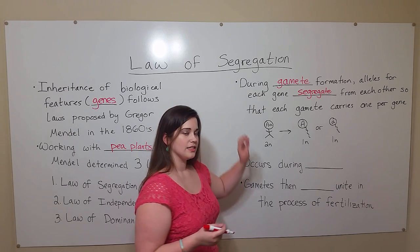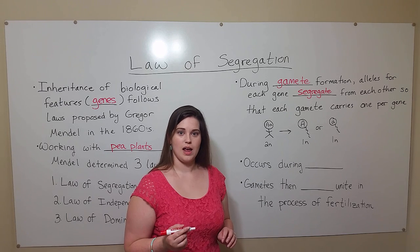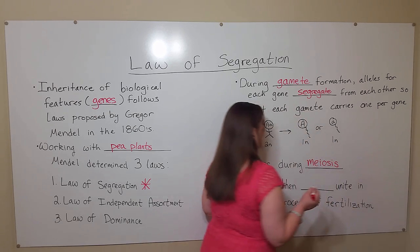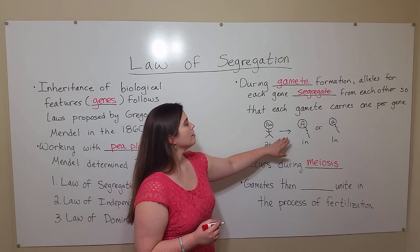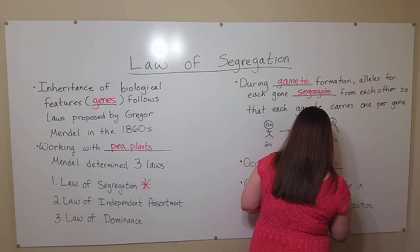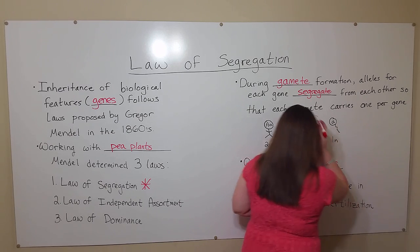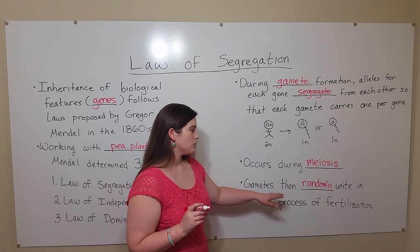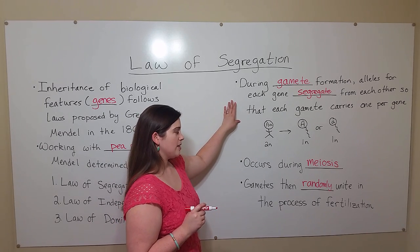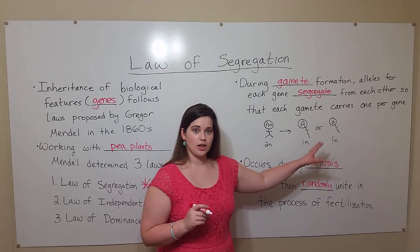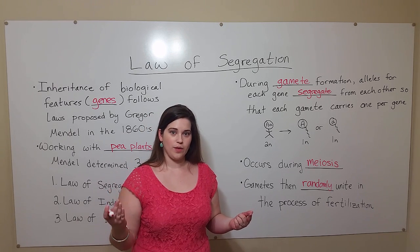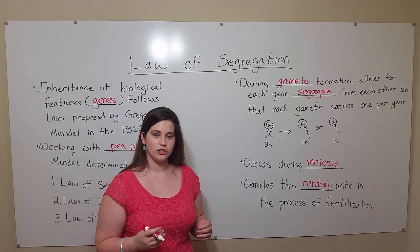When these alleles segregate from each other, it's happening during the process known as meiosis. Once the gametes have been formed during meiosis, they will then randomly unite in the process of fertilization. And this is where a lot of our genetic variety comes from — the fact that alleles segregate, that gametes can have different combinations of what the parent had, and that one random sperm unites with one random egg, resulting in a lot of potential diversity.